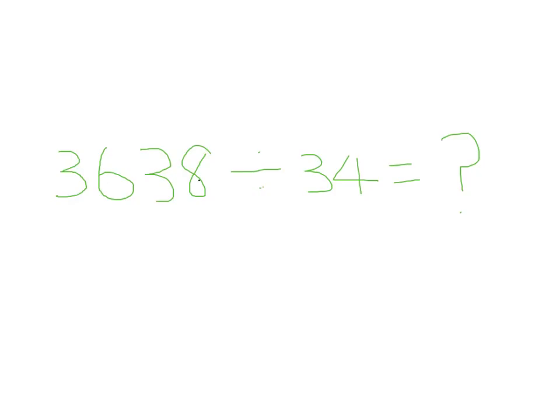I'm going to clarify about the dividend, divisor, and the quotient for this problem. So 3638 is the dividend, and 34 is the divisor. And the quotient we don't know yet.